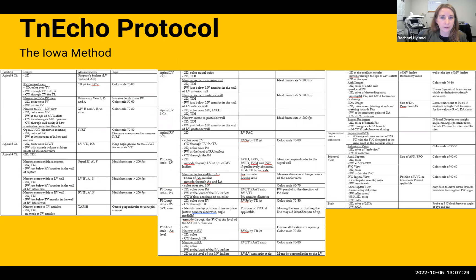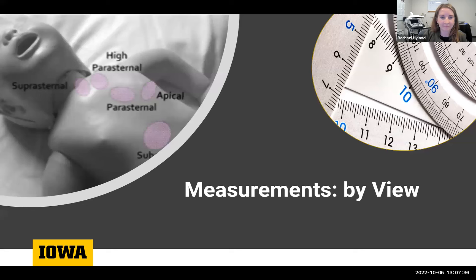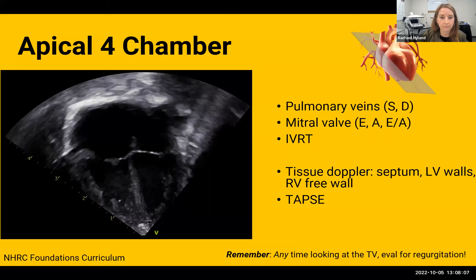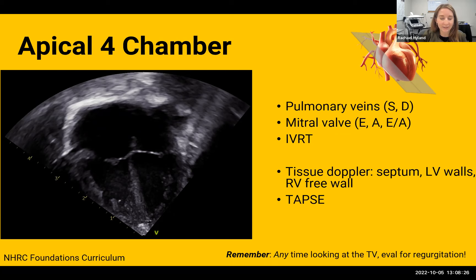We're going to go through measurements by view, following the protocol. You'll notice this doesn't follow the same pattern as a typical cardiology echo — there's been a lot of thought into it keeping in mind the developmental needs of a premature neonate. For example, we save the suprasternal and subcostal views for the end, as those are least well tolerated by babies. We start at the apex and look at pulmonary veins, mitral valve, aortic outflow tract, and tricuspid. One key disclaimer: any time you see the tricuspid valve in any window, you should assess it for regurgitation and do a continuous wave for a jet.